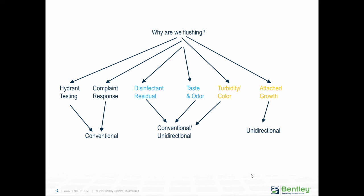The key question is why are we flushing? There are a lot of different reasons — whether hydrant testing or attached growth removal. Generally, cases involving moving water quality around don't require high velocities, while cases involving solids or biofilm removal do require high velocities. Once you understand why you're flushing, you can figure out your targets and decide whether to use conventional or unidirectional flushing.